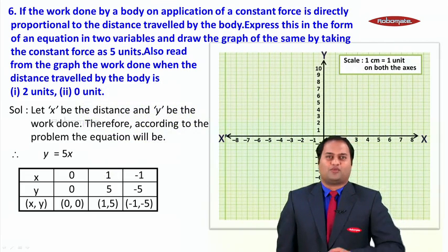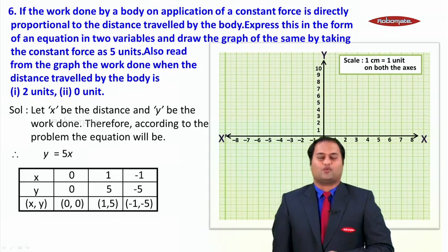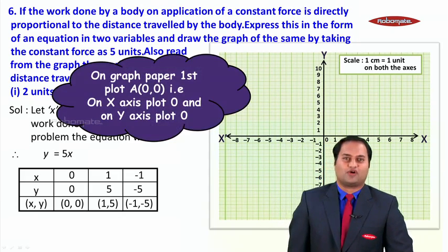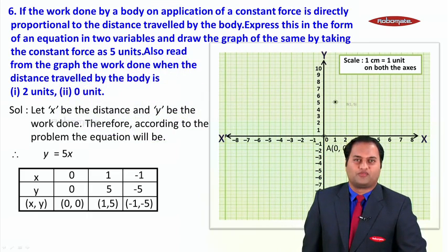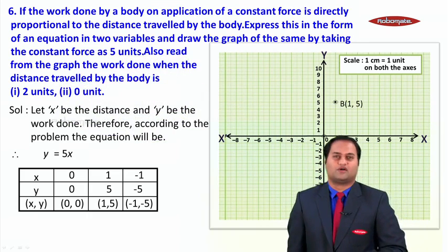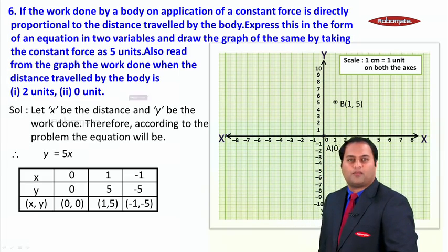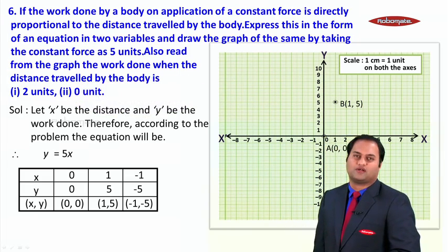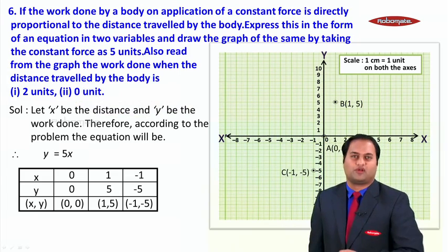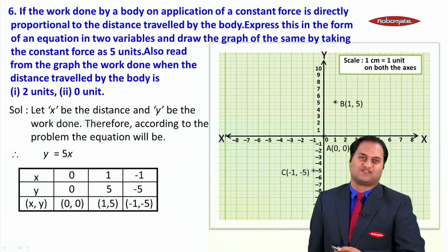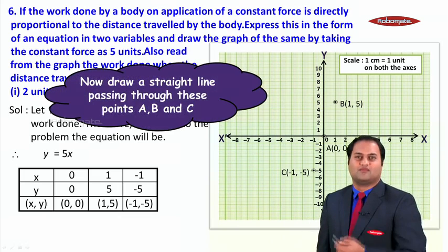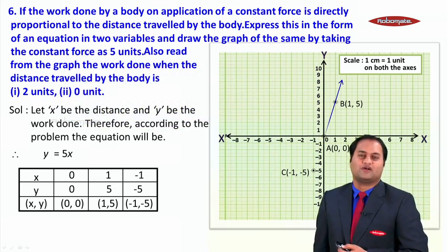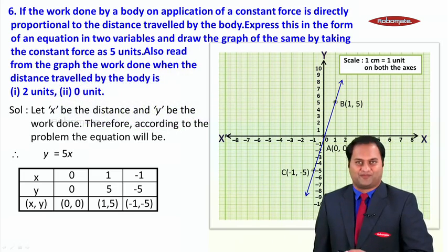Now let us plot these points on the graph paper. The scale is normal: 1 centimeter equals 1 unit. The first point is (0, 0), which is the origin. The second point is (1, 5), which is in the first quadrant. The third point is (−1, −5), which is in the third quadrant. All the points are collinear, so we can draw a straight line passing through all of them.